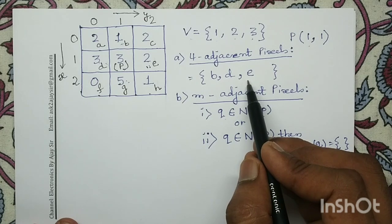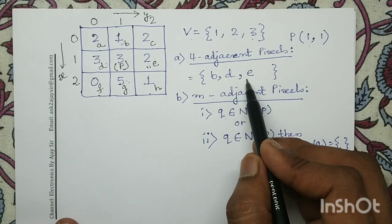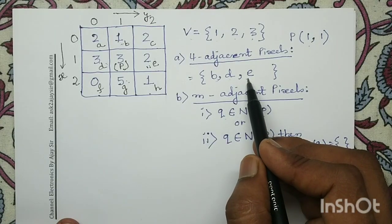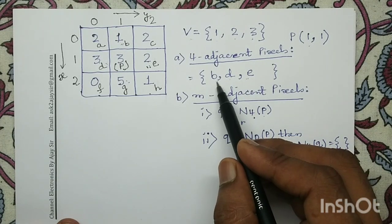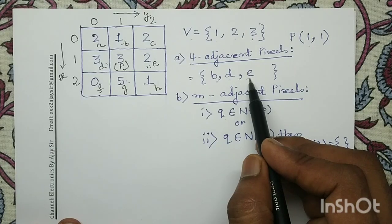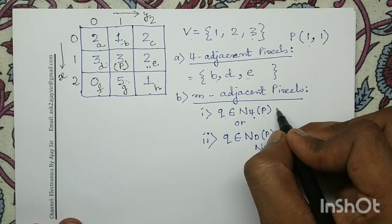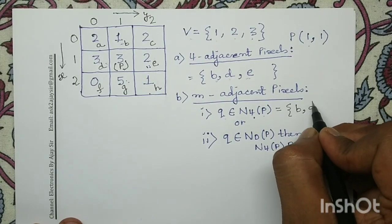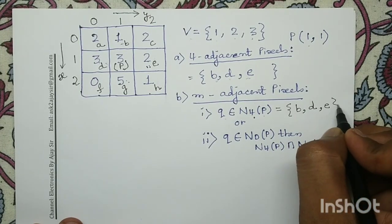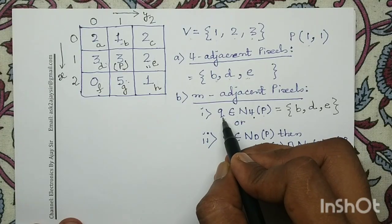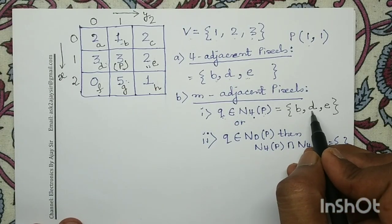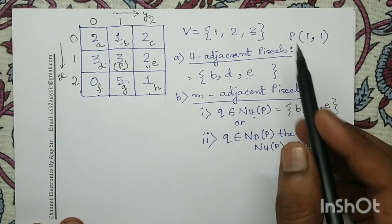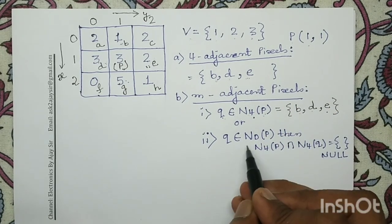First, we check if Q is a member of N4(P). The N4(P) set consists of pixels B, D, and E. Since pixels B, D, and E are four-adjacent to pixel P, and they belong to the V set, pixels B, D, and E satisfy the first condition and are M-adjacent to pixel P.